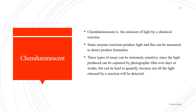Chemiluminescence is the emission of light by a chemical reaction. Some enzyme reactions produce light, and this can be measured to detect product formation. These types of assays can be extremely sensitive, since the light produced can be captured by a photographic film over days or weeks, but can be hard to quantify because not all the light released by a reaction will be detected.